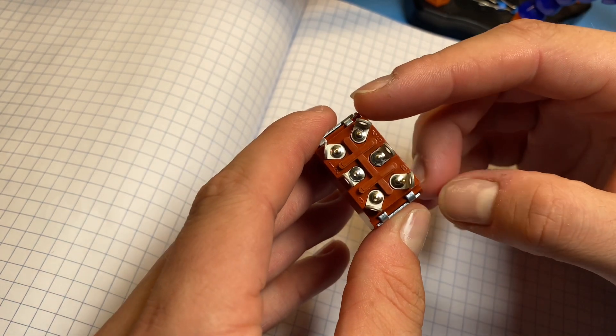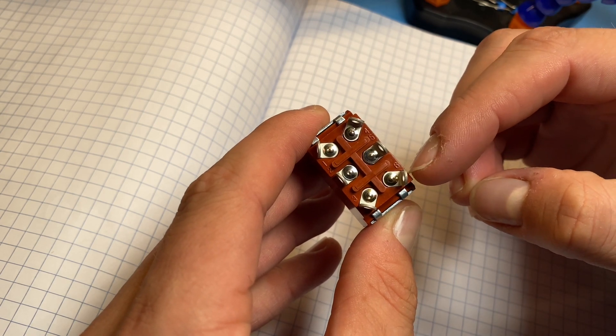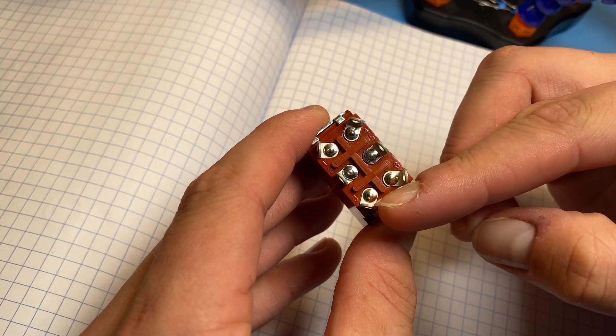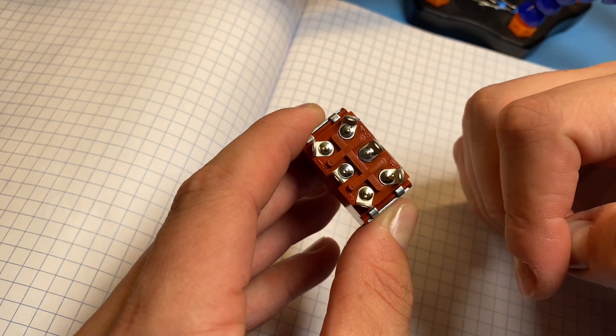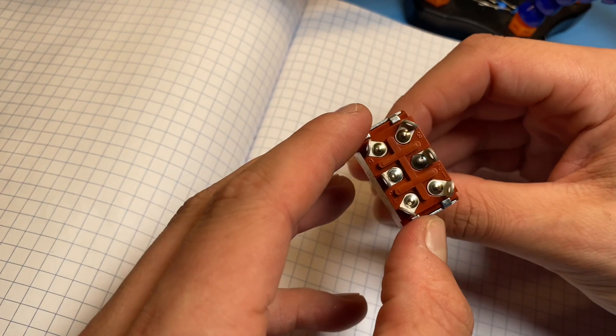So for our purposes, we'll connect the flip dot to one of these sides, connect power to the middle, and then switch the direction using these other two pins. It'll be much more obvious once I start soldering things up.